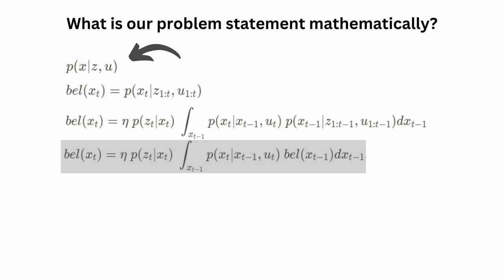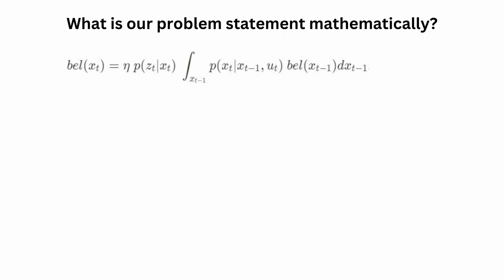This recursive approach allows us to estimate the state of the system based on the previous state, the control data for the current motion, and the current sensor observation. You really don't have to maintain a history of everything that has happened in the past, because that is already encoded in this recursive update scheme. Now we have a recursive update equation — we can split it into two steps: prediction and update, matching our idea from the previous video on alpha-beta filters.